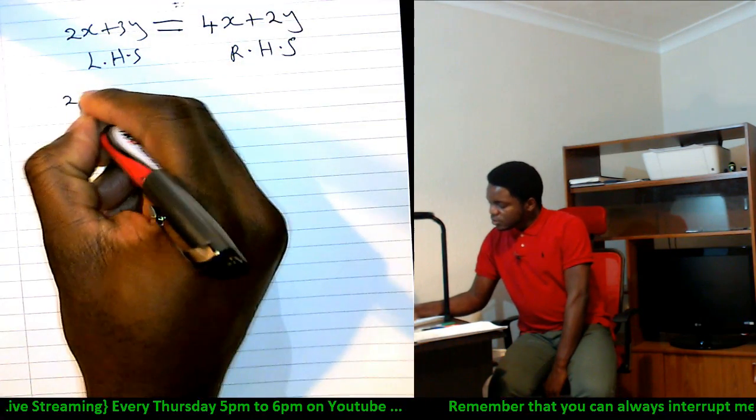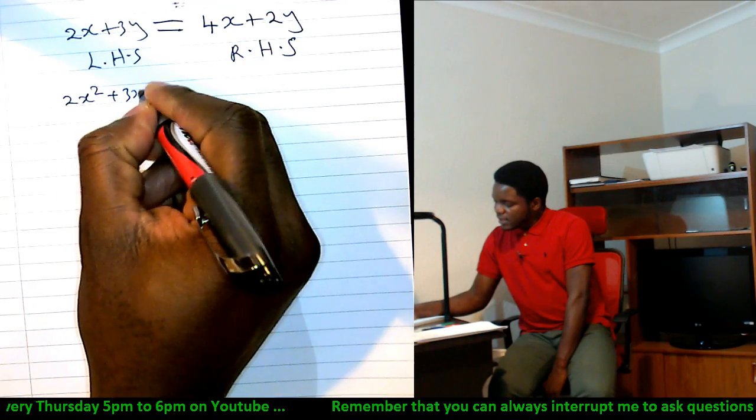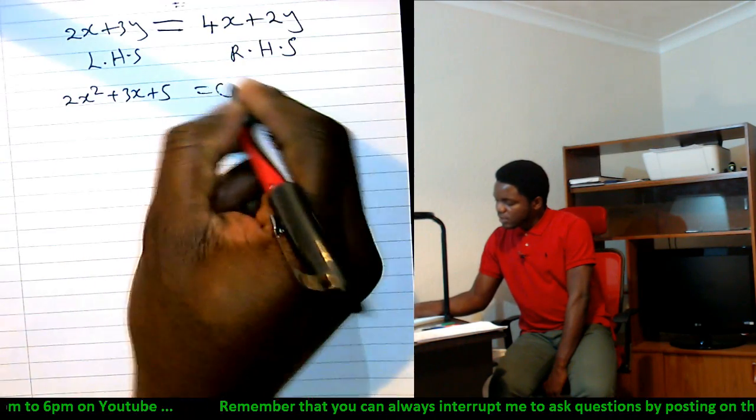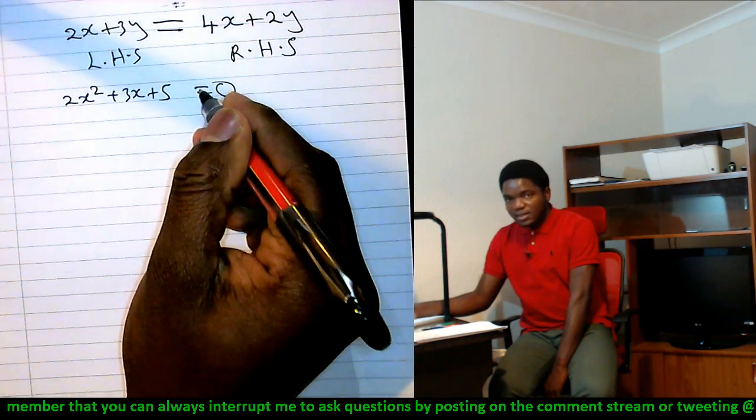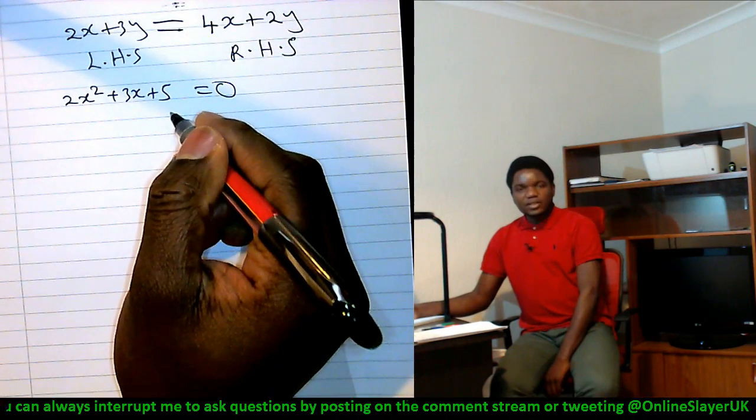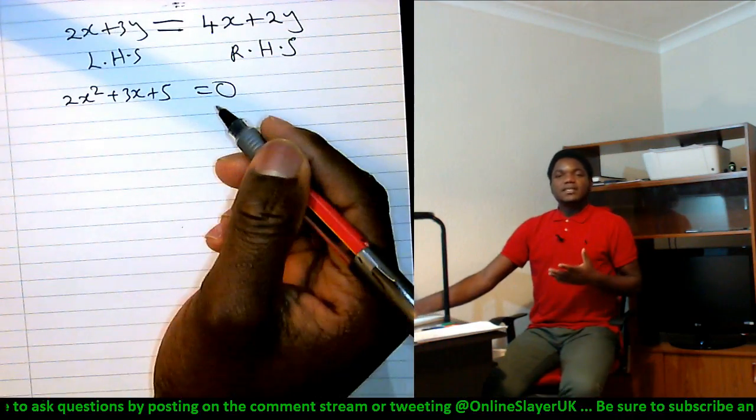For instance, 2x plus 3y is equal to 4x plus 2y. This is an equation because of the equality sign. So, you've got a left-hand side and a right-hand side. The left-hand side and the right-hand side. Now, each of them are expressions, but the equality sign there makes the whole of this an equation. So, you can have 2x squared plus 3x plus 5 equals to 0. I know that equation because there's an equality sign here. And usually, when we've got an equation, our job is to find the...